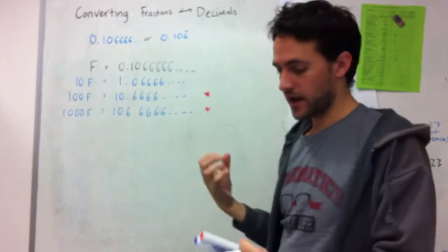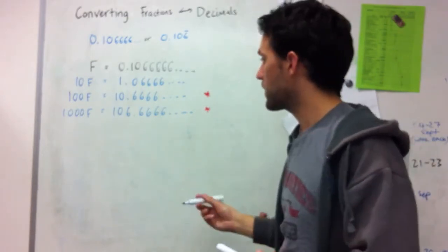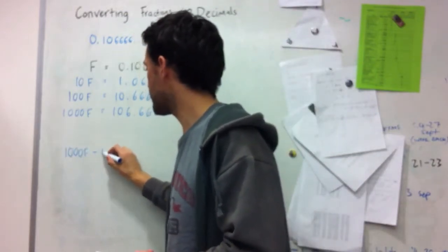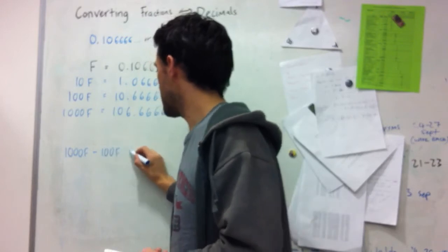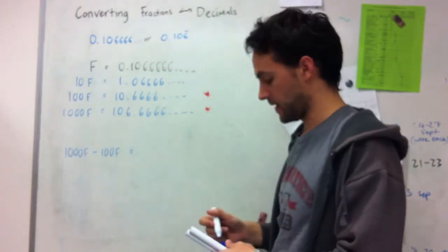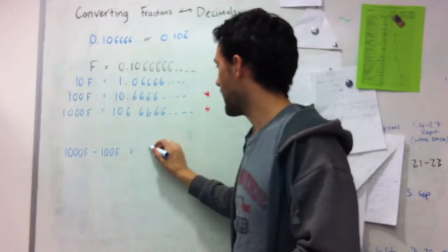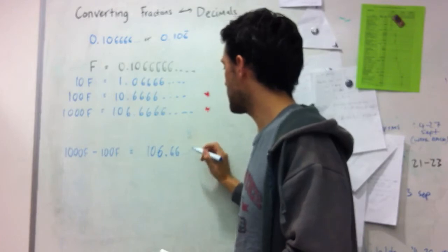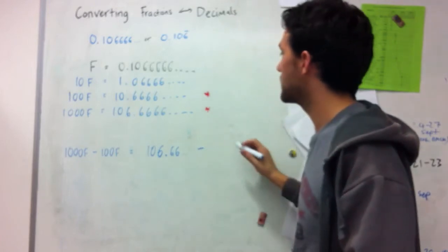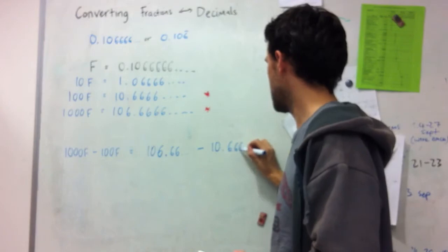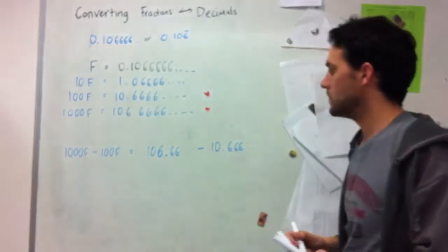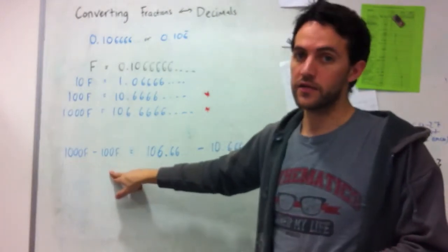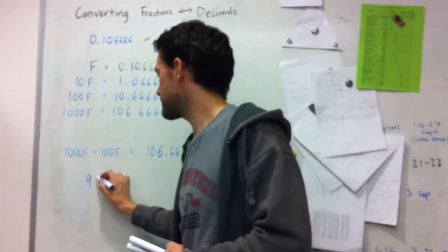So if I do a subtraction with these two numbers and work out the difference, what I'll have is 1000f minus 100f is the same as 106.66 recurring minus 10.66 recurring. So on this side I've got 1000 minus 100 lots of f, and that gives me 900f.